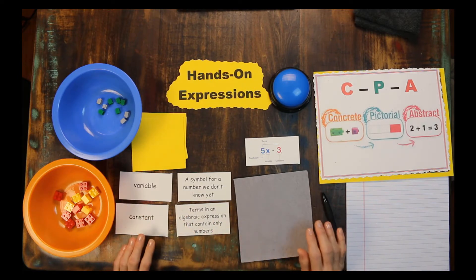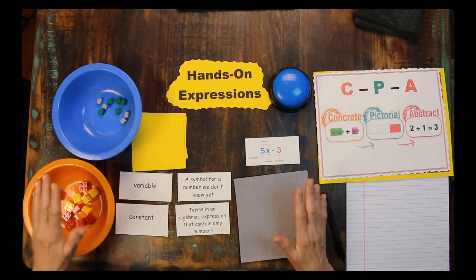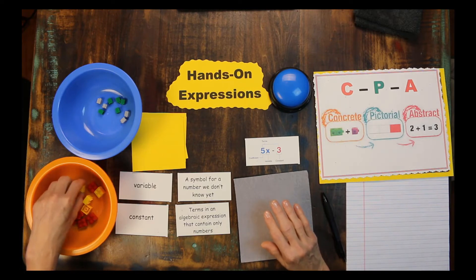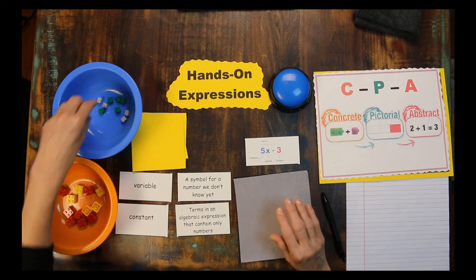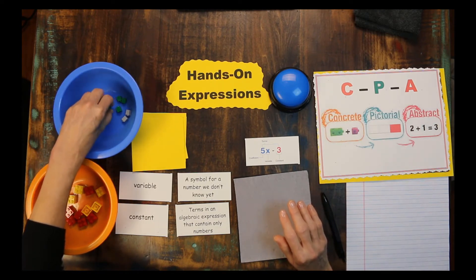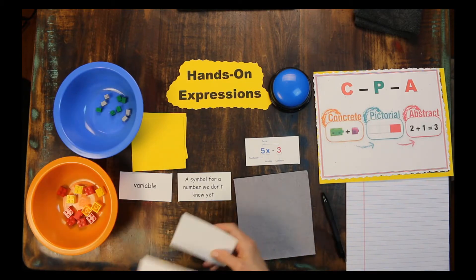For the purpose of this, it doesn't really matter how many studs or bumps are on these. I'm going to let the yellow represent positive and the red represent negative for the constants. I'm going to let the gray represent positive and the green represent negative.